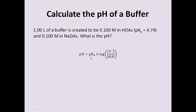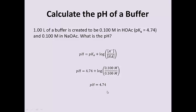The Henderson-Hasselbalch equation says that the pH is equal to the pKa plus the log of the concentration of the conjugate base divided by the concentration of the weak acid. In this case, the calculation is very simple because the concentration of the conjugate base is equal to the concentration of the weak acid. So this becomes the log of 1, which is 0, and the pH is equal to the pKa of 4.74. If the concentrations were different, we would just adjust the pH according to the Henderson-Hasselbalch equation.